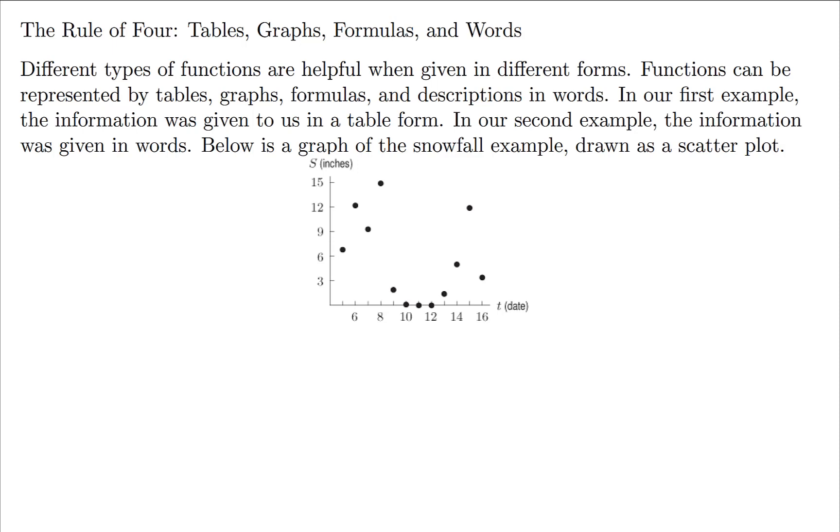Data can be often described in four different ways: tables, graphs, formulas, and words. The thing about these different ways of describing data is some versions are useful for certain kinds of data and some versions are not useful for some kinds of data. For example, here's your snowfall example. This was given to us in a table before. Here's a graph of the snowfall. Now this graph is not all that meaningful shown as a scatter plot, so we would probably rather have it given as a table.